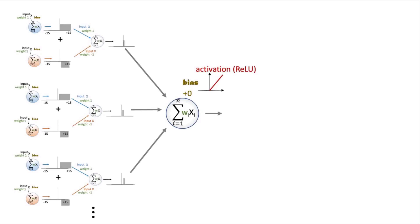Under ReLU, if this final neuron's sum of weighted inputs and bias is less than 0, we will output a 0, which is the same as it was with the step activation function. But now, if the sum is greater than or equal to 0, unlike the step activation function, we're not going to output a 1 — with ReLU, we're going to output the value of the sum itself. So if the sum value is equal to 1, we will output a 1. If the sum value is equal to 2, we're going to output a 2. If the sum value is 3, we're going to output a 3, etc.